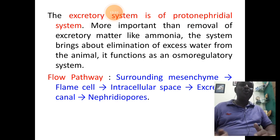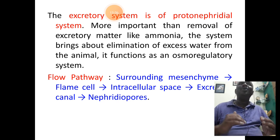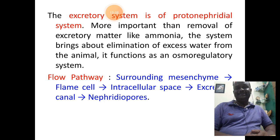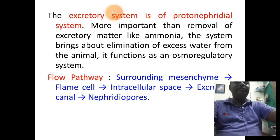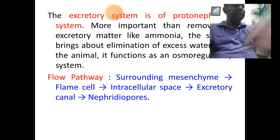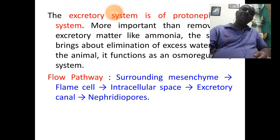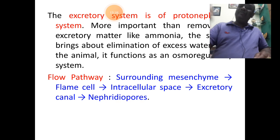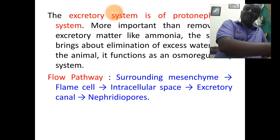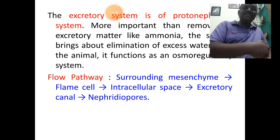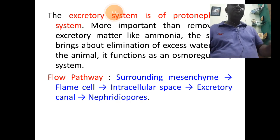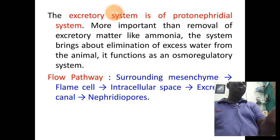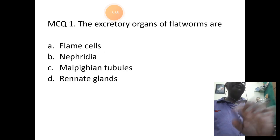The pathway of the excretory system: excretory waste originates in the surrounding mesenchyme cells, moves into flame cells, then into the intracellular space, from there into excretory trunks and canals, and finally out through the nephridiopore. That is about the physiology of excretion.